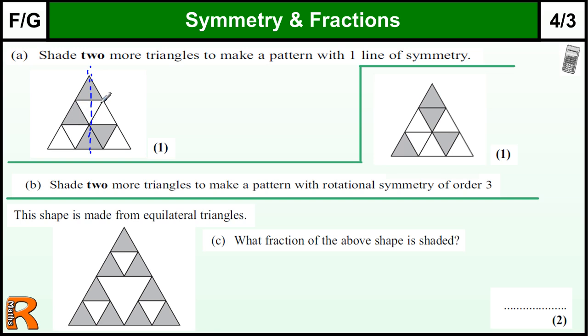Then this triangle here will reflect onto this triangle, so we shade that one in. And this triangle reflects onto this one, so we need to shade that in. Then we just need to check whether that has only one line of symmetry.